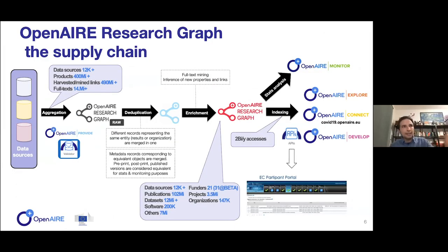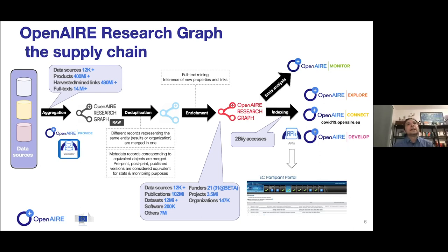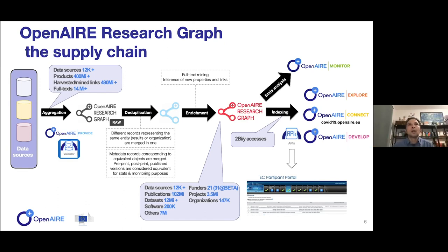To give you an idea, we collect from 17,000 data sources, around 400 million records, and close to a billion bilateral links. We include around 15 million full texts where we can find them. The first implementation, what we call the raw graph, is not deduplicated, so we have to go through the deduplication process. Here is where we can take different versions — from preprints to the published version — and put them together, while still keeping track of the original provenance.